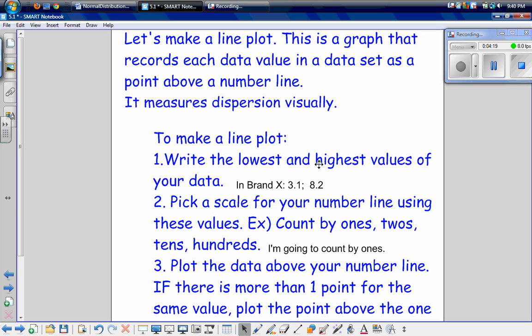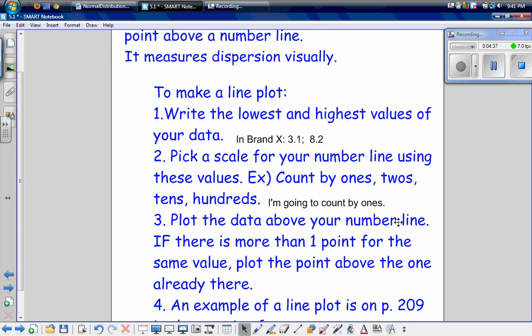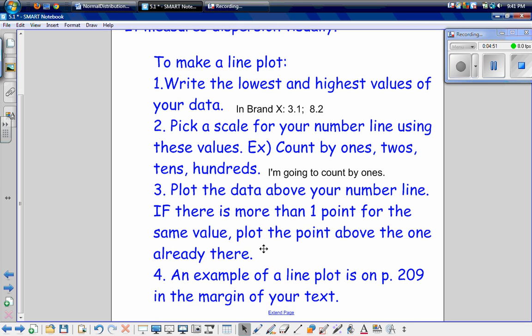To make one, we write the lowest and the highest values of the data. So in brand X, we have our lowest value is 3.1 and our highest value is 8.2. Then we're going to pick a scale using these values. So 3.1 and 8.2 are very far apart, so my scale is going to be ones. Our third step is to plot the data above the number line. Then if there's more than one point for the same value, plot the point above the point that's already there. So if we have two 5.7s, I'm going to plot my dot above 5.7, then I'm going to plot a second dot above that one. An example of a line plot is on page 209 in the margin of your text, or as follows.